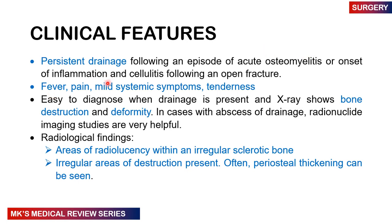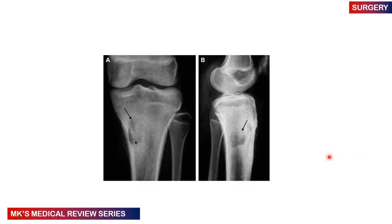Clinically, patients with chronic osteomyelitis may show persistent drainage following an episode of acute osteomyelitis, or onset of inflammation and cellulitis following an open fracture. Fever, pain, mild systemic symptoms, and tenderness may be present. It is easy to diagnose when drainage is present and X-ray shows bone destruction and deformity. Radionuclide imaging studies are very helpful in cases with abscess drainage. X-rays may show an area of radiolucency with irregular sclerotic bone, irregular areas of destruction, and periosteal thickening.